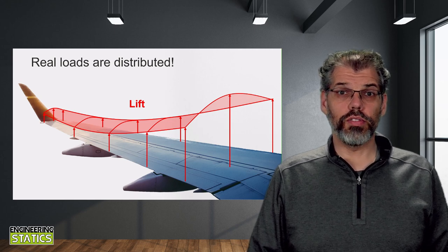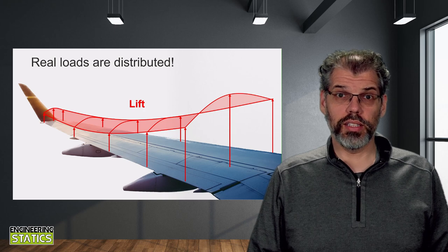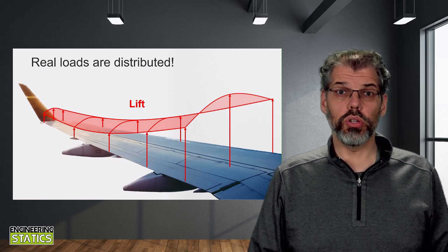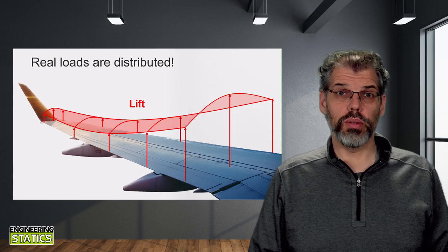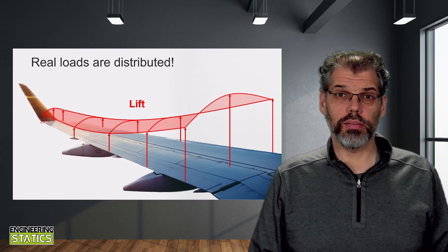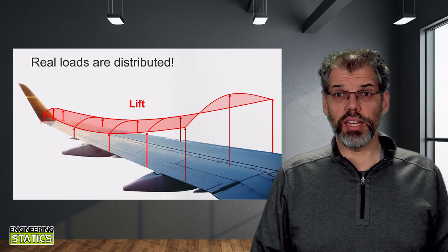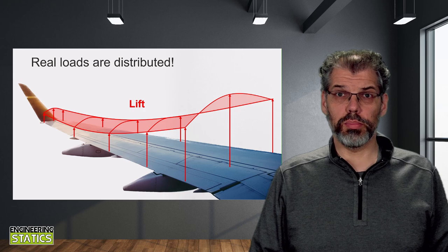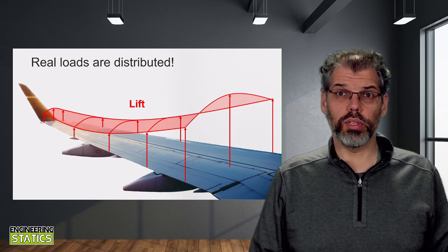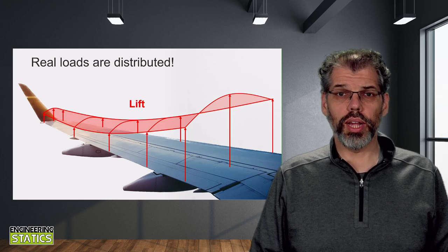But this is less convenient to work with for some analyses, particularly when examining the system using Newton's laws of motion, as we do in many facets of engineering mechanics. In such cases, we often replace the distributed load with its statically equivalent resultant force. So how can we do that?